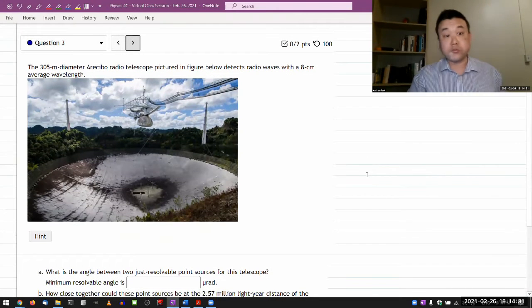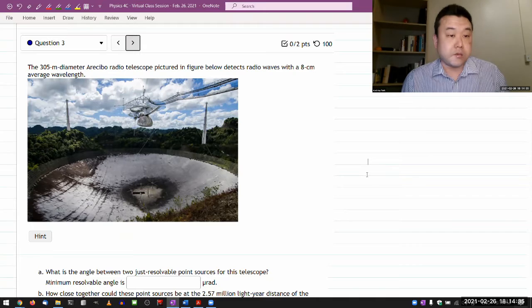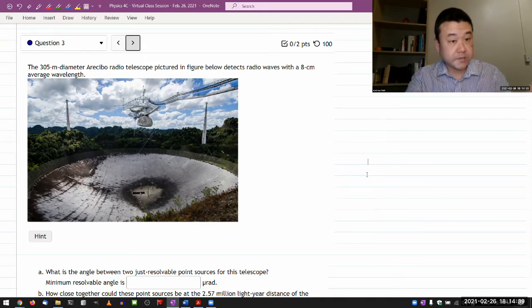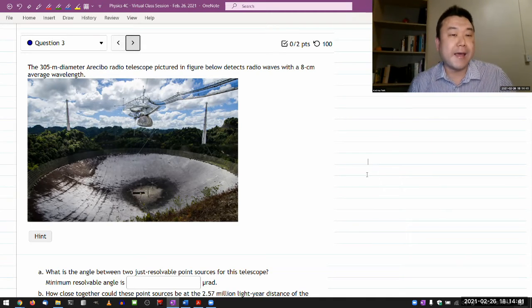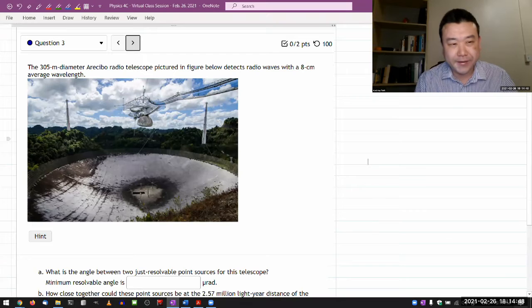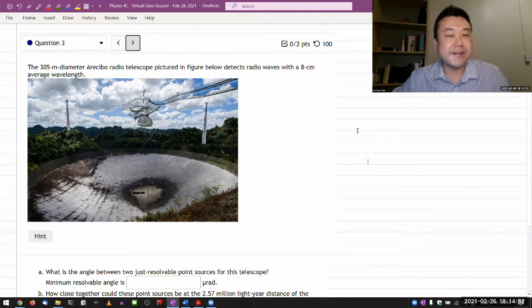I'll do question three. I won't do question two unless there are people actually requesting that question. So this is question three. From the fact that it's talking about telescopes, I already have a sense this is going to be about Rayleigh criteria. Let me get started here.